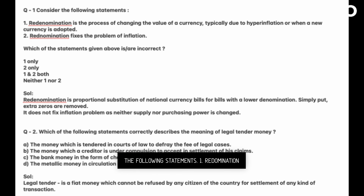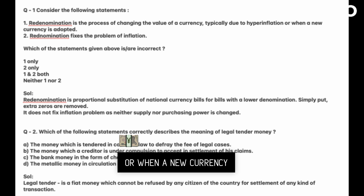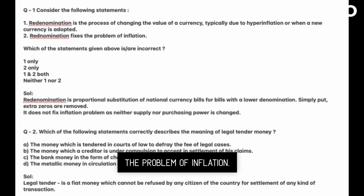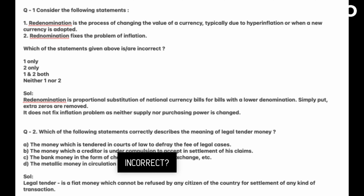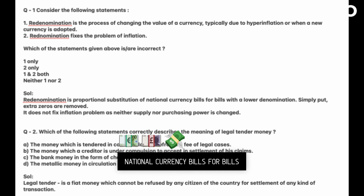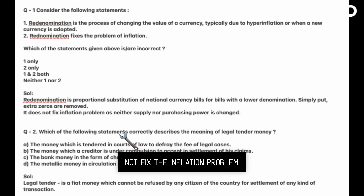Consider the following statements: One, redenomination is the process of changing the value of a currency, typically due to hyperinflation or when a new currency is adopted. Two, redenomination fixes the problem of inflation. Redenomination is a proportional substitution of national currency bills for bills with a lower denomination — simply put, extra zeros are removed. It does not fix the inflation problem as neither supply nor purchasing power is changed.